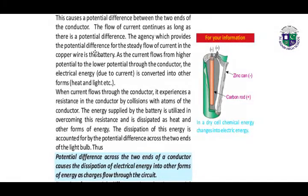The source which provides the potential difference for the flow of current in the copper wire is the battery. As the current flows from higher potential to lower potential through the conductor, the electrical energy due to current is converted into other forms of energy like heat and light.